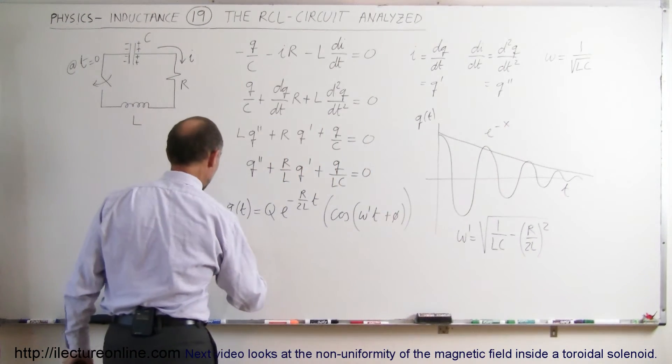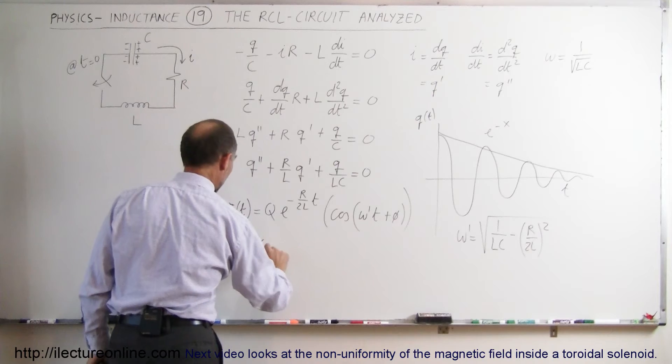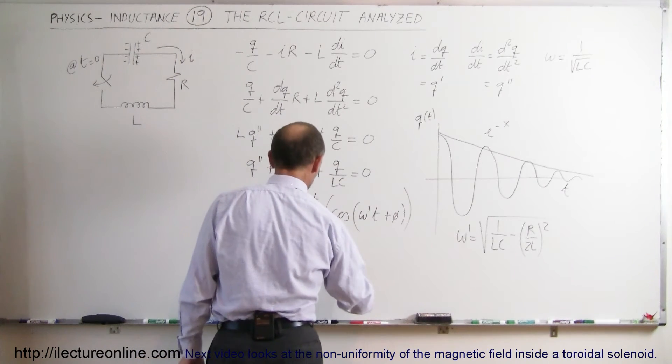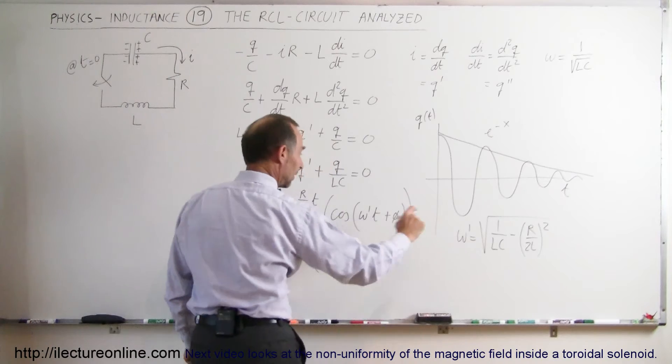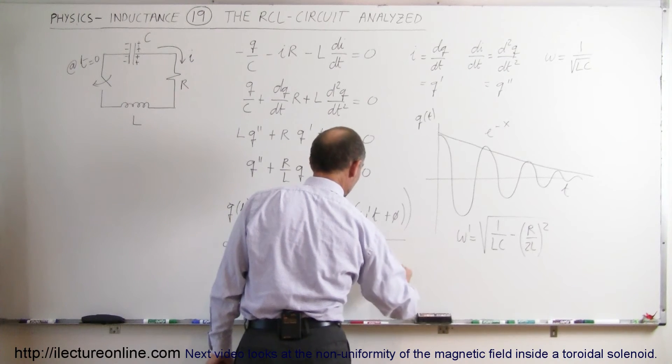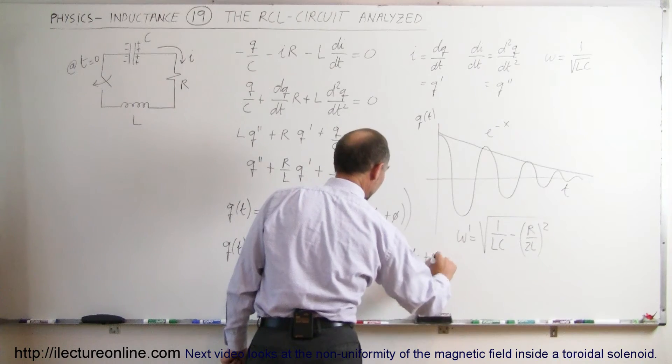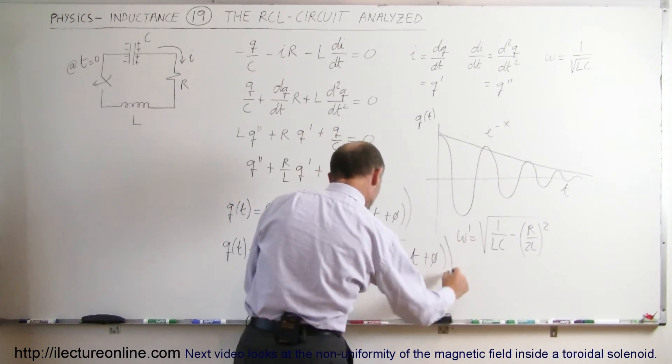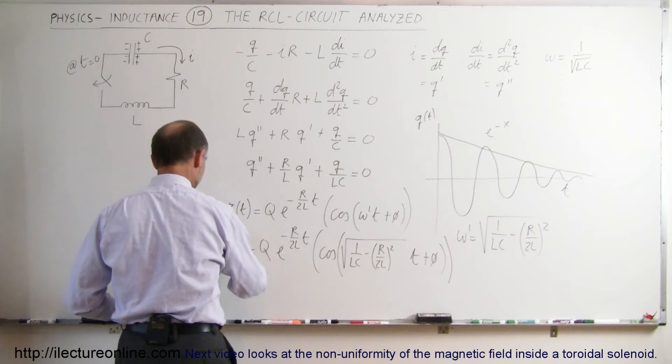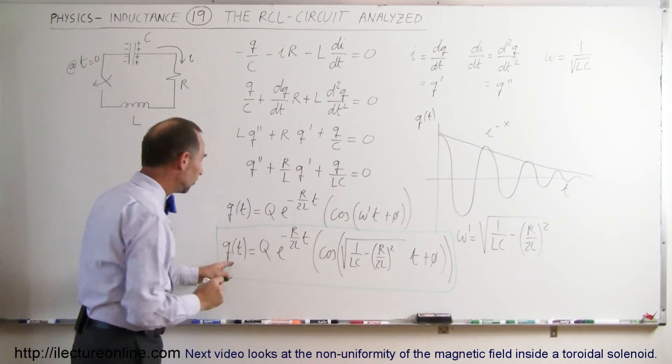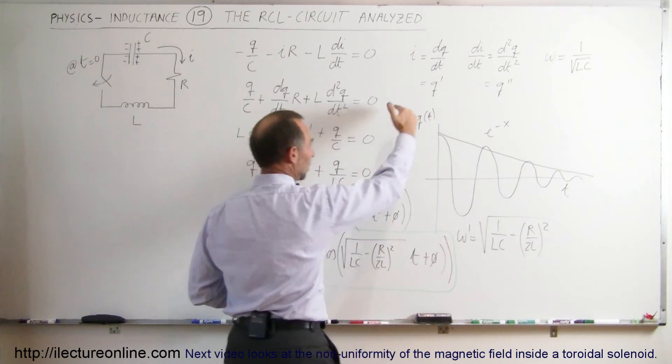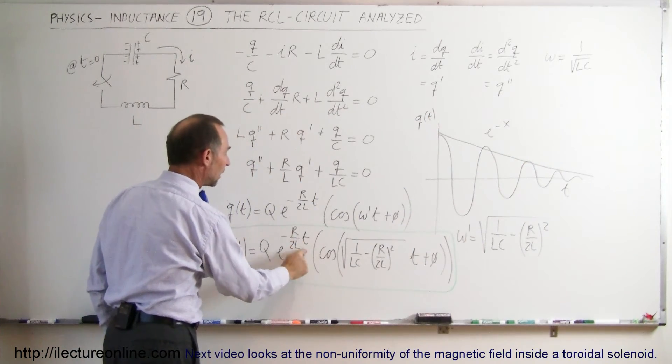And if we then plug that into our equation, we get q as a function of time is equal to the total charge on the capacitor when we start out times e to the minus r over 2l times t times the cosine of the square root of 1 over lc minus r over 2l quantity squared times the time plus the phase angle. And then if we put a nice box around that, we'll use green to box it all in. So this then describes the equation that we just graphed. The oscillation frequency is right here. The diminishing magnitude here is defined by e to the minus r over 2l times t.